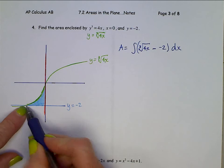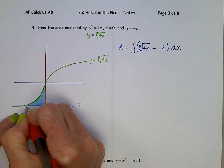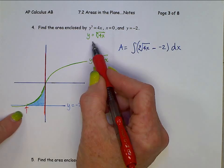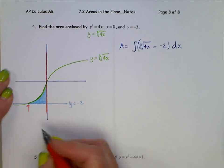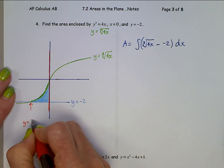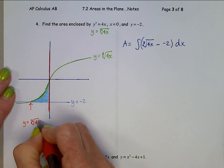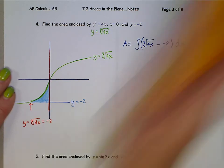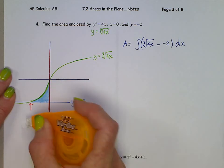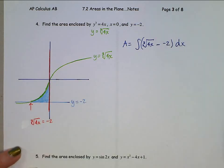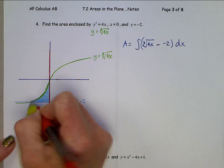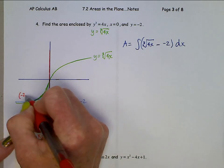So points of intersection. You need to find this point of intersection right here. That point of intersection, isn't that where this cube root function of cube root of 4x equals a y value of negative 2? Yep. Let's just solve that equation. Cube both sides, that gives us 4x is negative 8, so x is negative 2. This point of intersection right here, then, x is negative 2, y is negative 2.